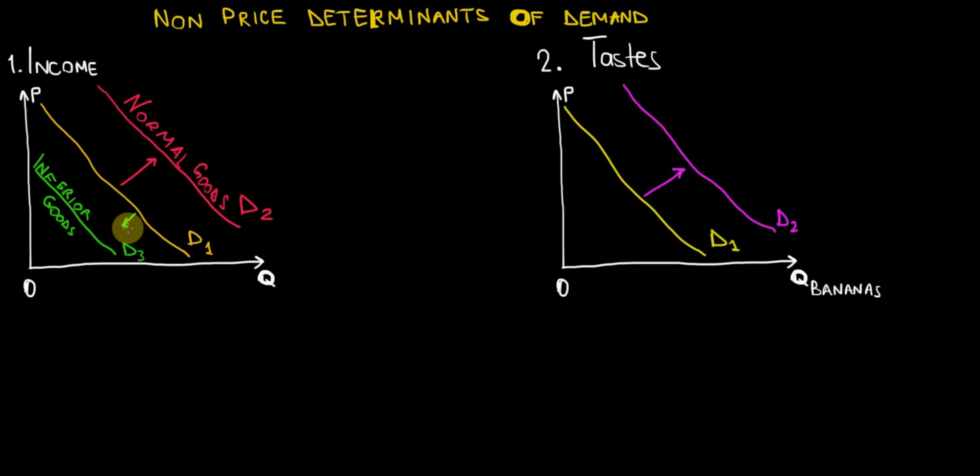Now let's turn our attention to the second factor, which is the tastes of individuals in a given society. Suppose for the sake of the example that we're describing the market of bananas, and suppose that all of a sudden people start enjoying bananas more. Maybe because the season has produced a lot of sweet bananas, much tastier than usual, but people just enjoy them more and want more of them.